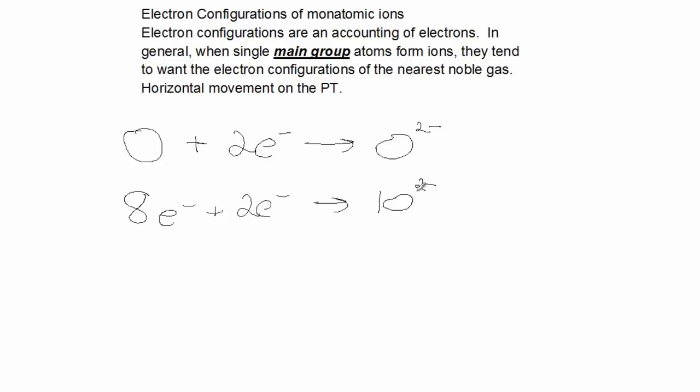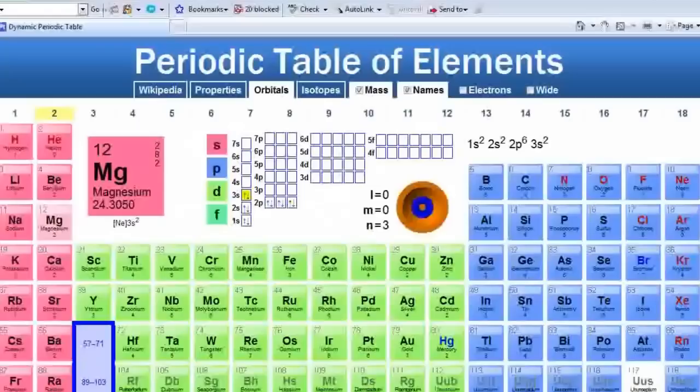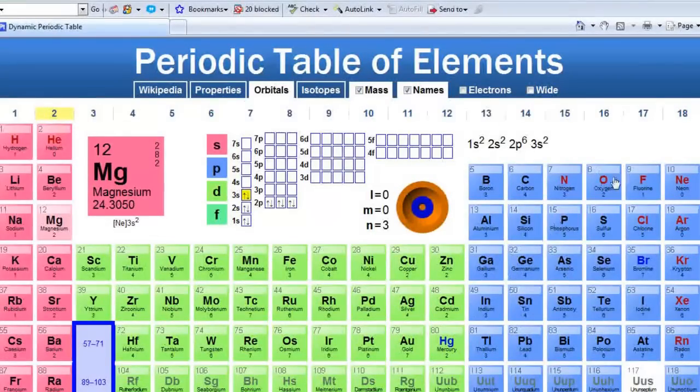Therefore, the O2 minus has a total of 10 electrons. And what noble gas has 10 electrons? Neon. Going back to the periodic table, there's oxygen. Eight electrons. Picks up two electrons. It has the electron configuration like neon.